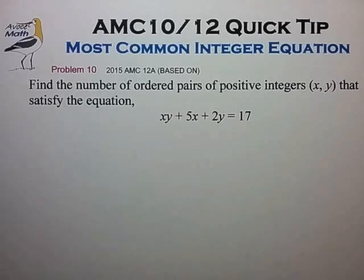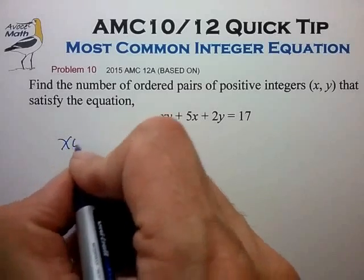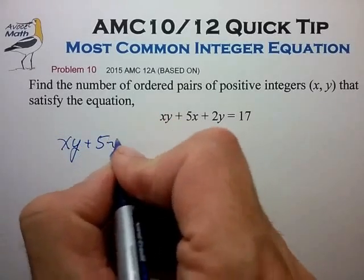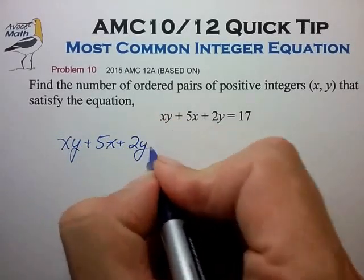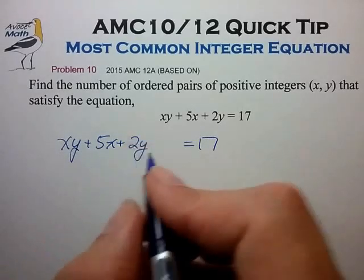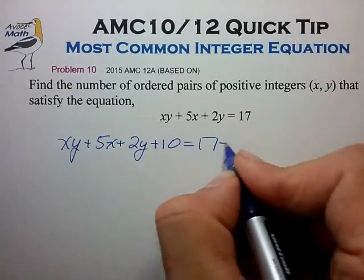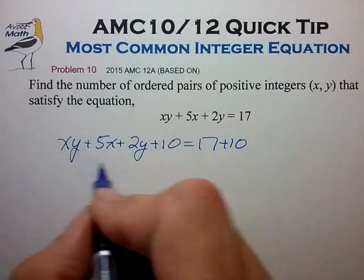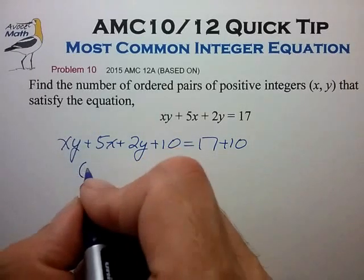The solution method is pretty straightforward. We take the equation, identify the coefficients 2 and 5, multiply them together, and add to both sides. We can now factor the left side into a very useful form.